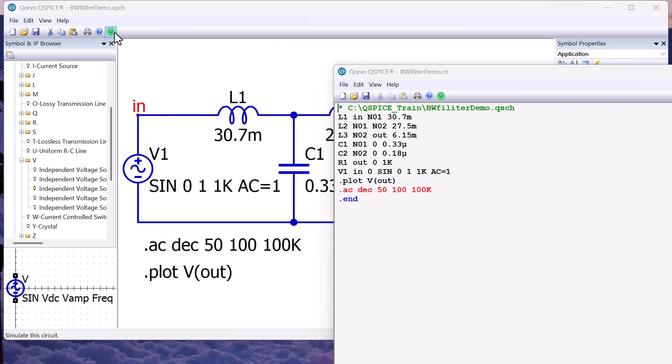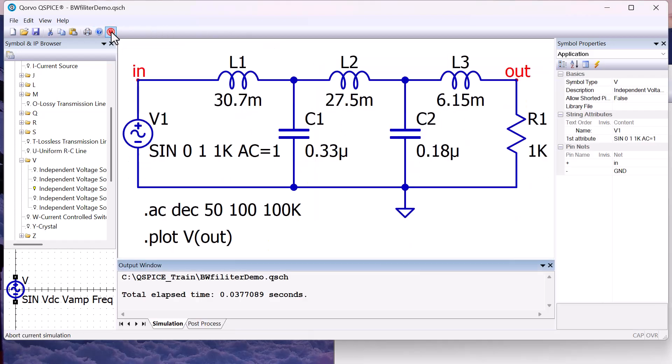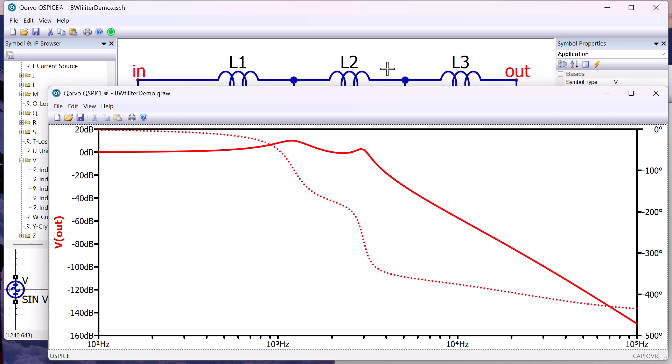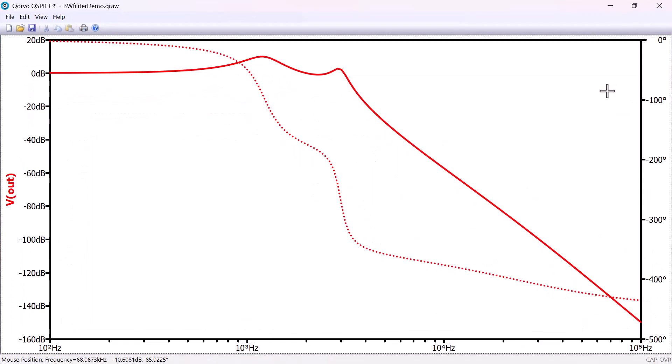Run the simulation. We get the frequency response simulation result that we expect. Phase is on the right-hand axis and phase is the dashed red line.